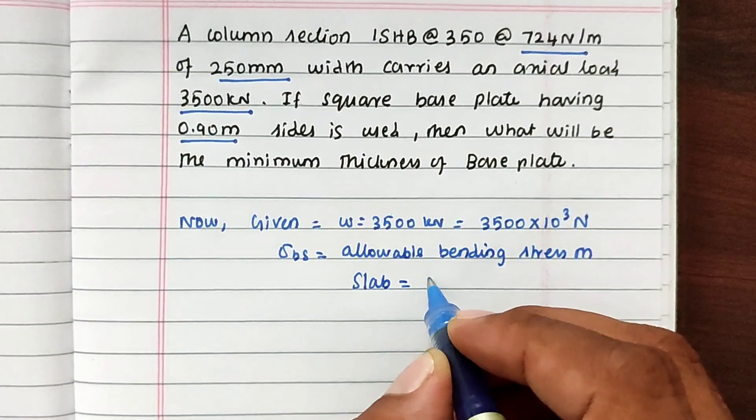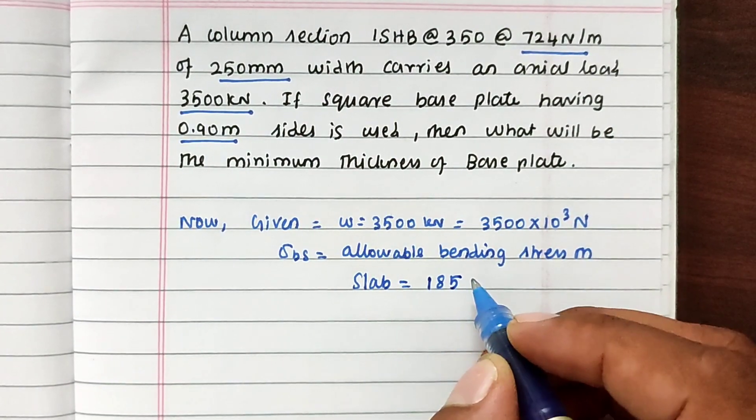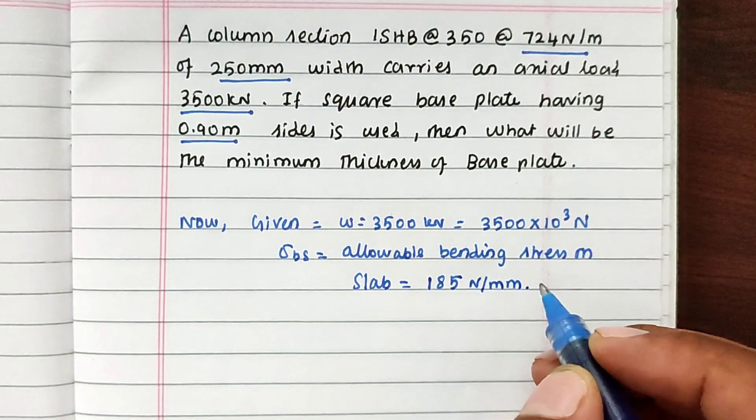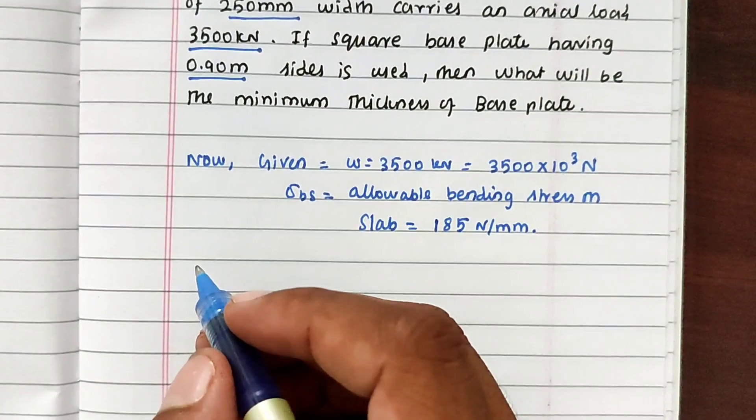So we can take 185 N per mm square. Now the thickness - we have to find out the thickness.